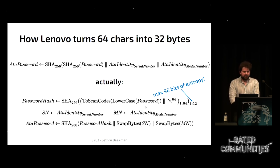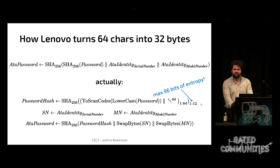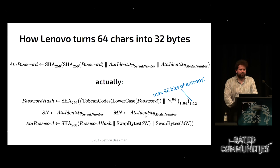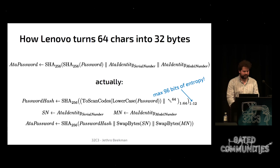Unfortunately the algorithm is a little more complex than this. The password hash actually uses the scan codes of the password, which means there is no case distinction for letters. Also, after hashing it truncates to only 12 bytes, meaning there's a maximum of 96 bits of entropy in this password hash. However, most human passwords have less than 96 bits of entropy to start with, so it's probably not a big deal. Then this 12-byte hash is concatenated with the serial number and model number, except the bytes are swapped. The byte swapping is unclear, but it probably relates to the ATA protocol using 16-bit words while the model number and serial number are 8-bit character streams — likely an endianness issue.